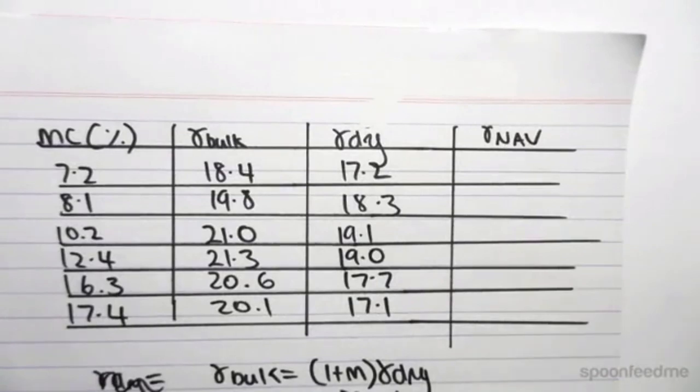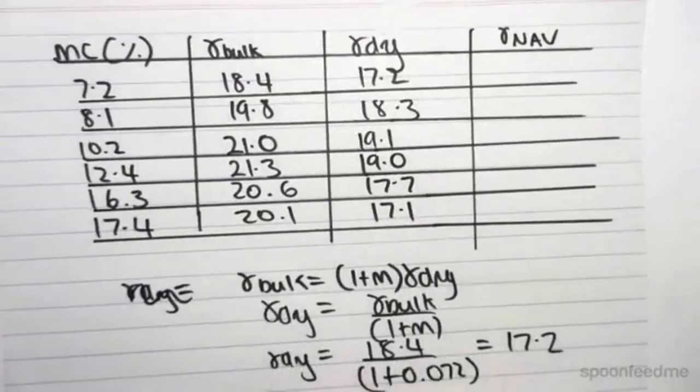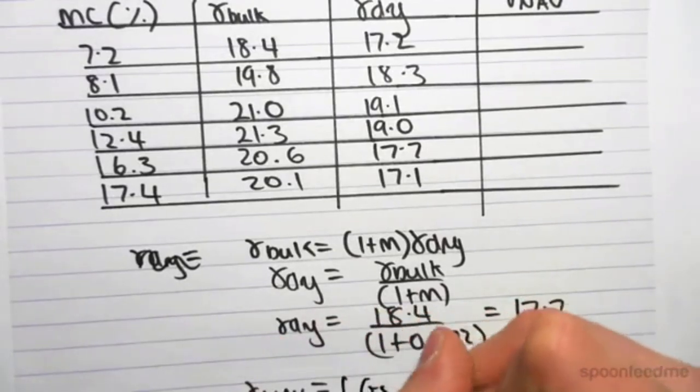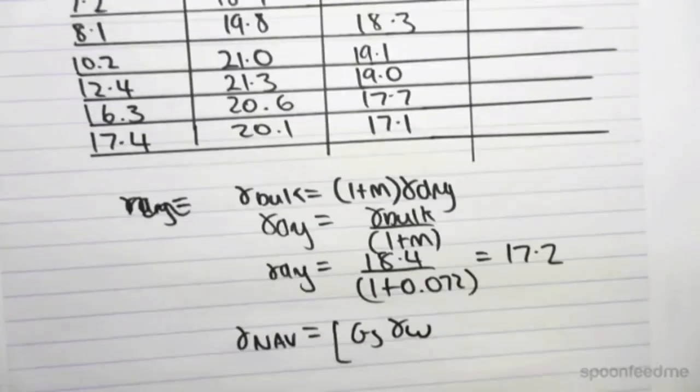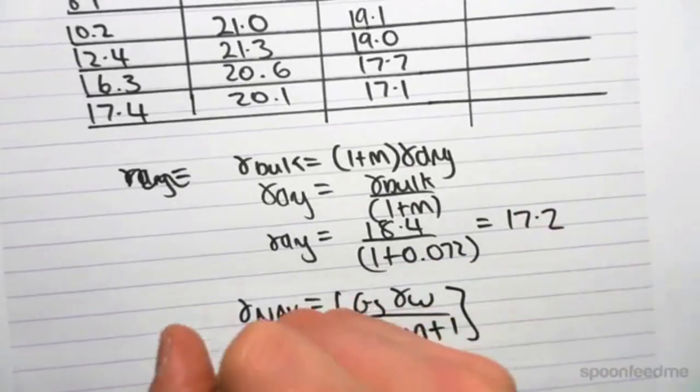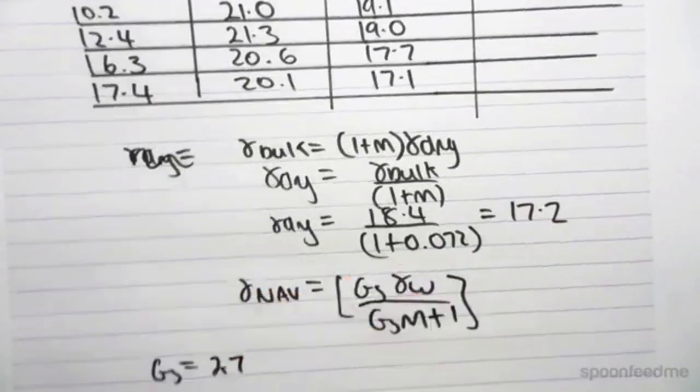Now we need to find the gamma of the no air voids line, so we can graph that line as well. We know that the gamma of the no air voids line is gs gamma w on top of gsm plus 1. So let's say for our soil, gs is 2.7.